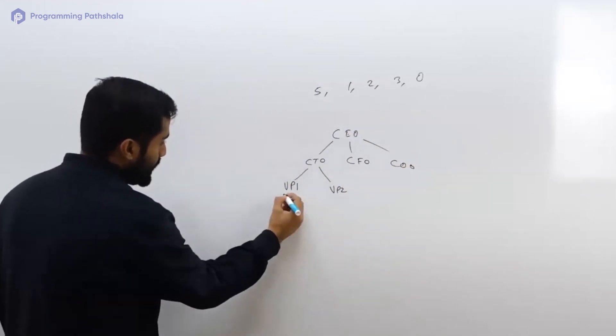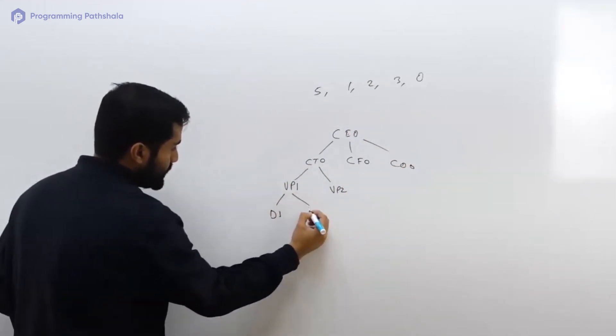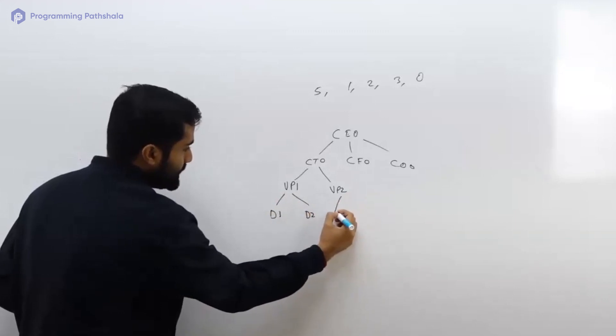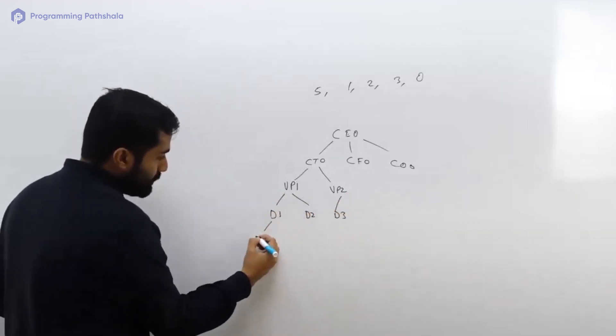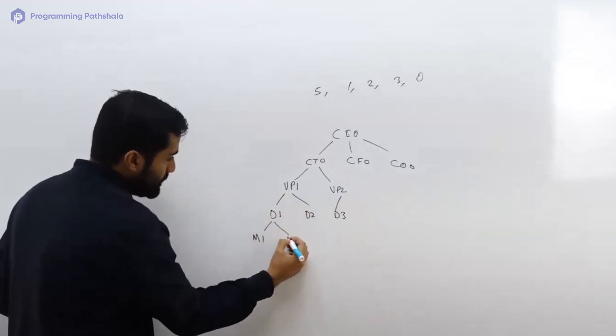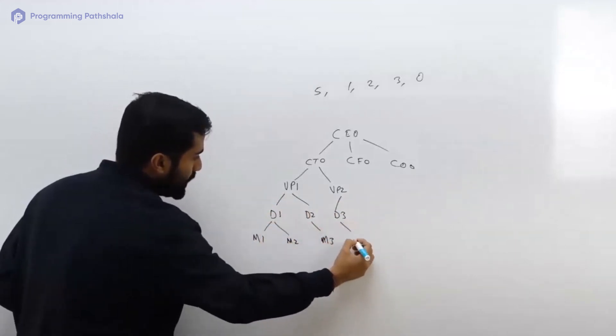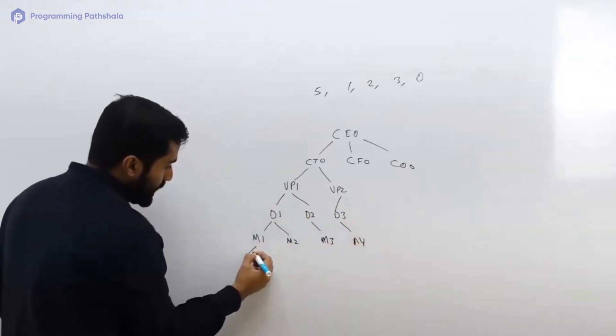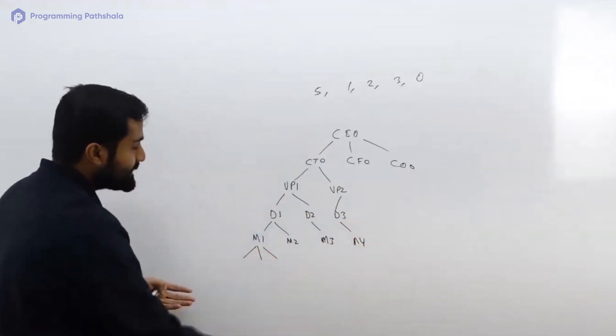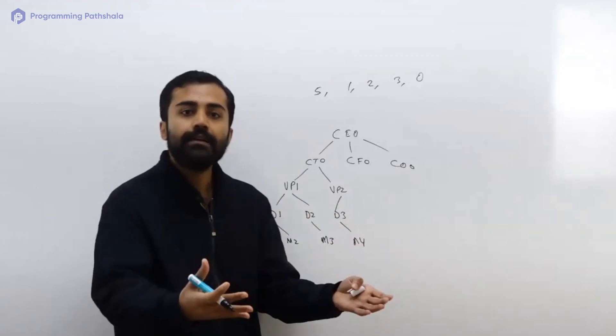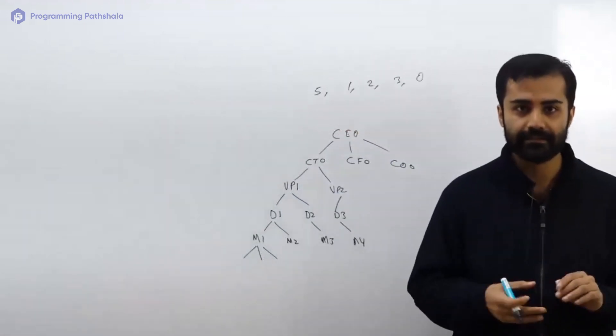And under these vice presidents you have again got directors: Director 1, Director 2, and here you have Director 3. Again under Director 1 let's say you have Manager 1, Manager 2, here you have Manager 3, here you have Manager 4. And now again under them there can be some tech leads and under them there can be some SDs and under them there can be some interns. So there is a huge structure like that.